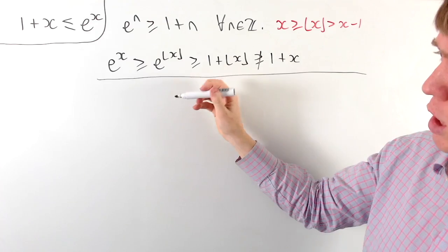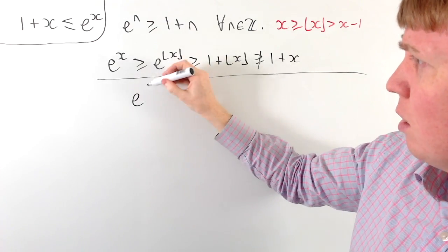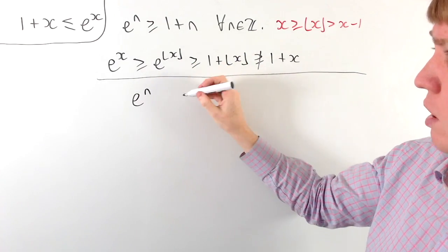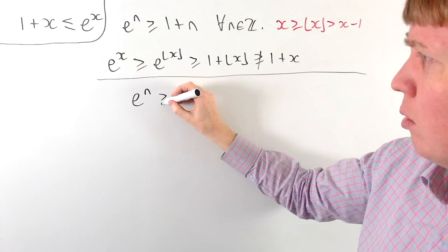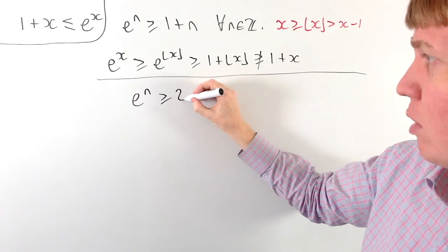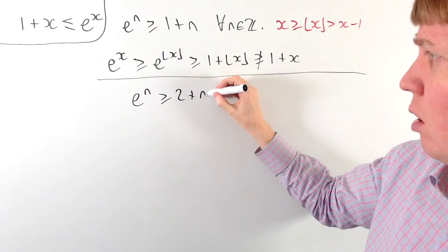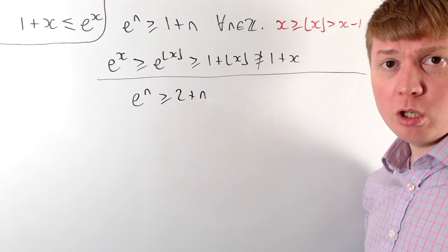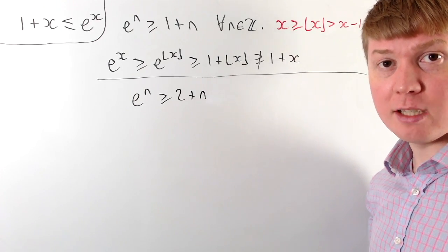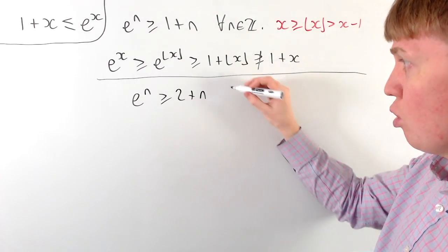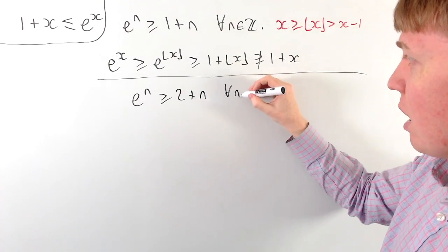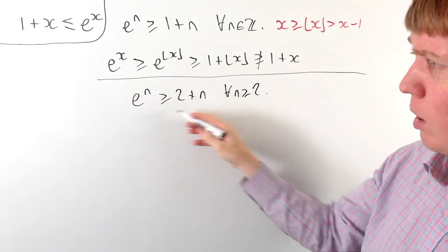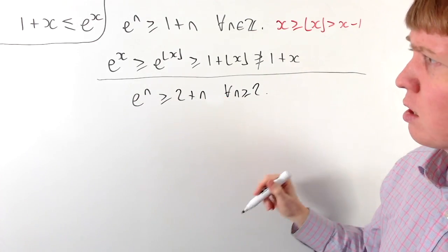We can redeem this by showing that instead of e to the n being greater than or equal to 1 plus n, we show that e to the n is greater than or equal to 2 plus n. This works for all values of n greater than or equal to 2.